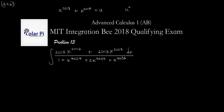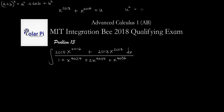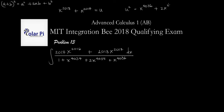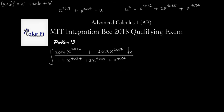We know that when we square a plus b, we get a squared plus 2ab plus b squared. So a is x to the 2018 and b is x to the 2017, and therefore u squared is going to be a squared, which is x to the 4036, plus the middle term 2ab, which is 2 times x to the 4035, plus b squared, which is x to the 4034. And this portion of the denominator is exactly u squared.